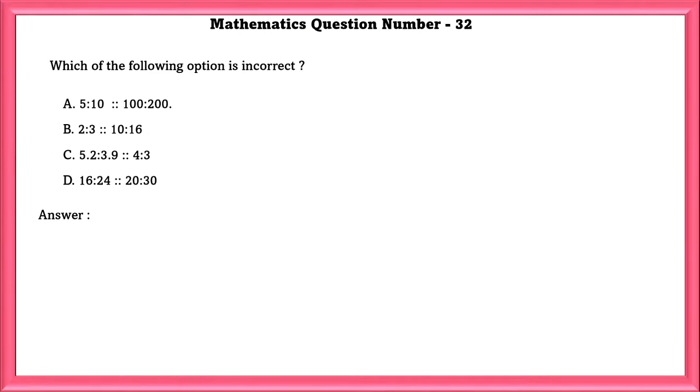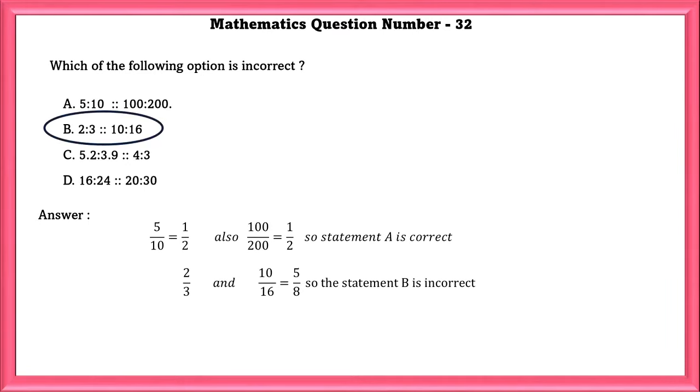Mathematics question number 32. Which of the following options is incorrect? A. 5 is to 10 and 100 is to 200. 5 by 10 can also be written as 1 by 2 and 100 by 200 can also be written as 1 by 2. So statement A is correct. Statement B. 2 is to 3 and 10 is to 16. 2 by 3 is the lowest form. 10 by 16 can be reduced to 5 by 8. So the statement B is incorrect because these two fractions are not equivalent.